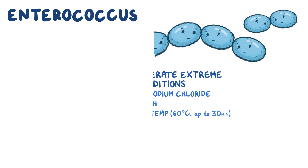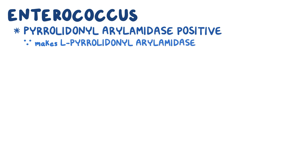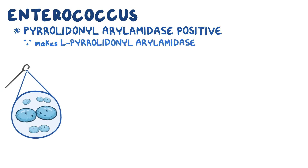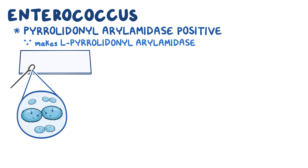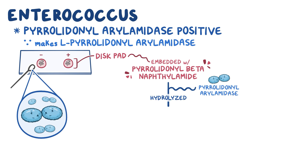Enterococcus is pyrrolodonyl arylamidase positive, because it makes an enzyme called L-pyrrolodonyl arylamidase. To test for this, a small sample is taken from a suspected bacterial colony and then inoculated to a disk pad embedded with pyrrolodonyl beta-naphthalamide. With Enterococcus, pyrrolodonyl arylamidase hydrolyzes pyrrolodonyl beta-naphthalamide to produce beta-naphthalamide.